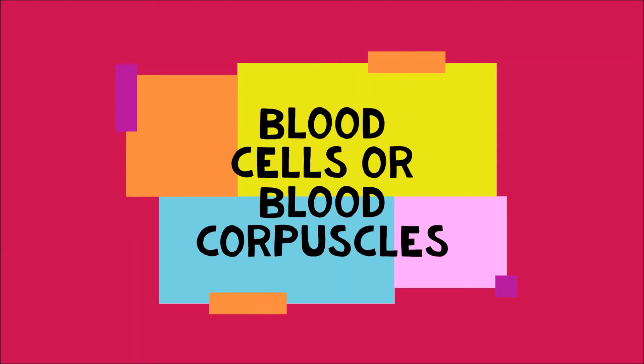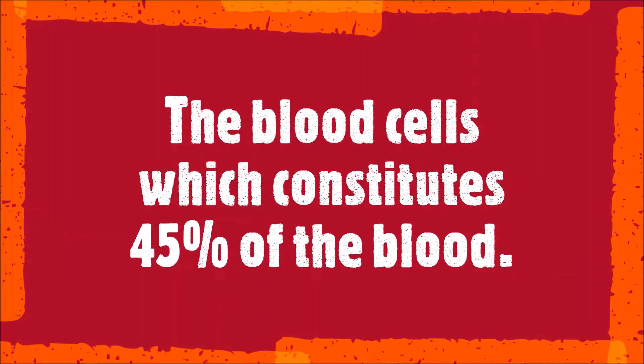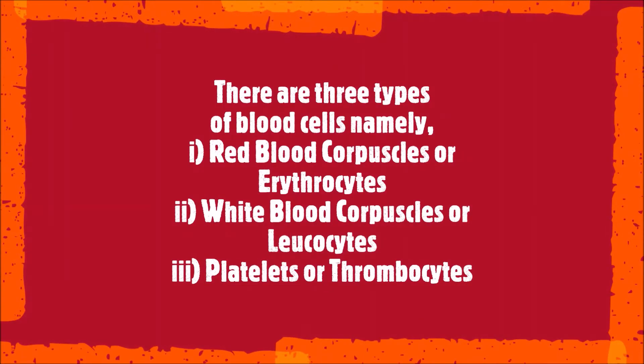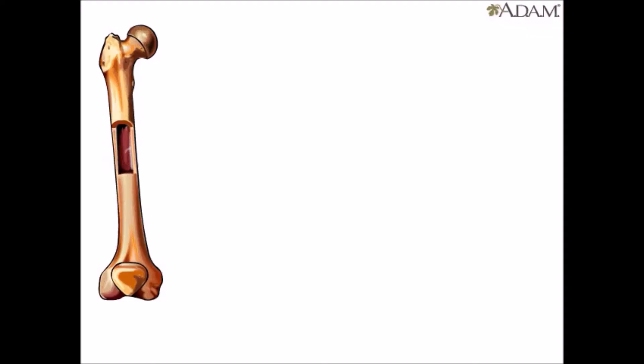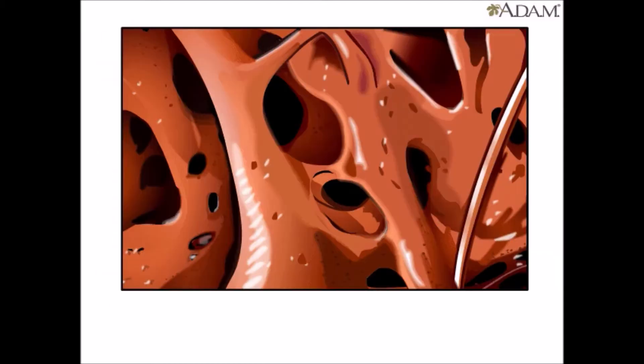Blood corpuscles are the blood cells which constitute 45 percent of the blood. There are three types: red blood corpuscles or erythrocytes, white blood corpuscles or leukocytes, and platelets or thrombocytes. The blood cells are synthesized inside red bone marrow such as in ribs and vertebrae, and they disintegrate in the spleen and liver.